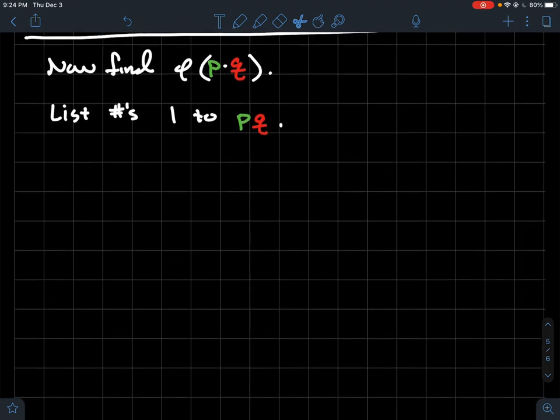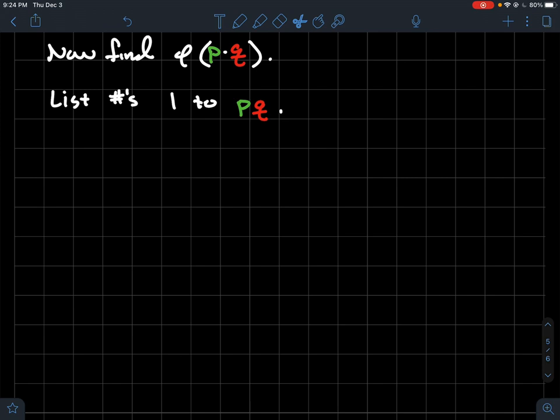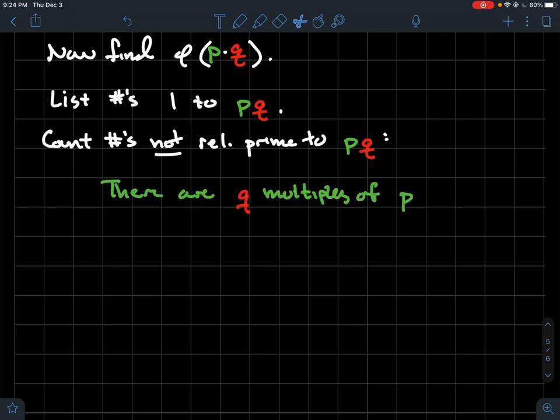So we'll do that same exact thing. So first, think about in your head listing out the numbers from 1 to pq, whatever that looks like. But we're going to go through the list again, and we're going to count how many numbers are not relatively prime to p times q. Well, that means that they either had to be a multiple of p or a multiple of q, right, since these p's and q's are primes. So let's count again, just like we did above. There should be q multiples of p in your list that you're thinking about in your head. And there should also be p multiples of q.